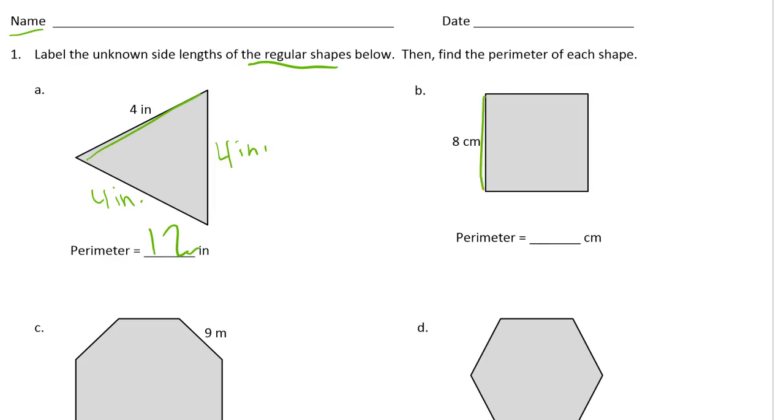For B, this side here is 8 centimeters so that means all the sides are 8 centimeters and 8 times 4 is 32.